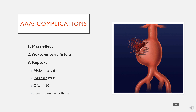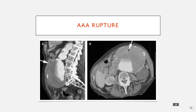Another complication is rupture of the triple-A, which will result in abdominal pain and the mass becomes expansile — rather than just pulsing up and down on examination, it will continue pulsing out. This usually happens in patients with large triple-A's, typically over 50 years old. Rupture often results in haemodynamic collapse due to significant bleeding into the abdominal cavity — potentially several litres — leading to shock. This CT scan shows a significant bleed from the abdominal aorta, with a huge sac of blood expanding into the intraperitoneal space.